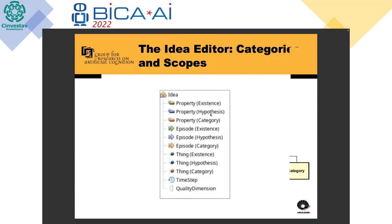We have created an idea editor, which is a way of visualizing computational ideas more easily. Different icons show the different possible elements that can appear inside an idea. For example, a property can be in the world of existence, the world of hypotheses, or the world of categories. The same applies to episodes and things — all available in three types.